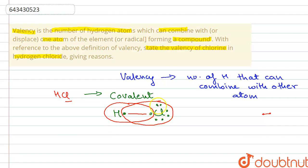Hydrogen has achieved noble gas configuration of two electrons in its outermost shell, so both are now stable and have formed bonds by sharing of electrons. Only one electron has been shared, and chlorine already had seven electrons in its outermost shell.